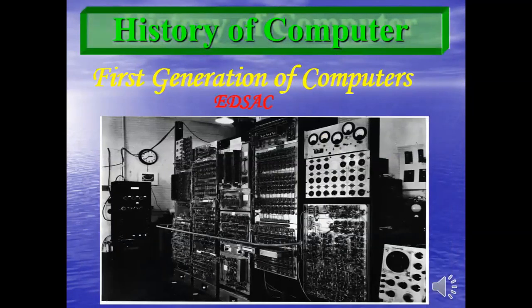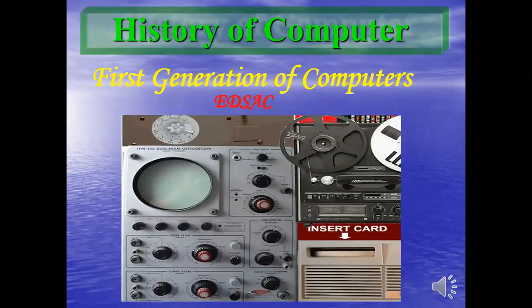EDSAC — the Electronic Delay Storage Automatic Computer — had the capability to store programs on magnetic tape. In another picture of EDSAC you can see the magnetic tape on the right side, and there is also a card insert option where you can store data on a card, similar to a floppy disk or magnetic tape.